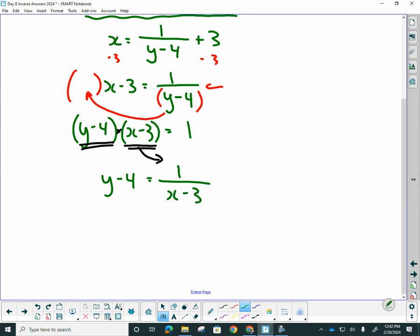And now I'm really close to isolating for y, but I have a minus 4. The inverse of that is plus 4. And I get my equation for the inverse. So I'm going to put it in function notation plus 4. And again,